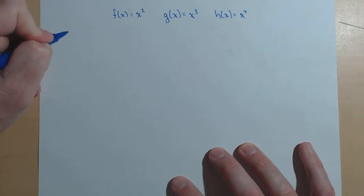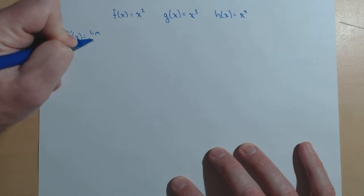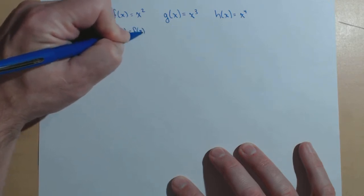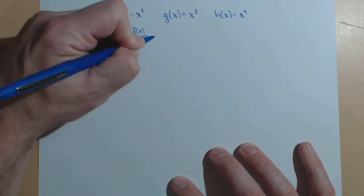So first, let's find f prime of x. Our definition of the derivative is the limit as h goes to zero of f of x plus h minus f of x, all over h.